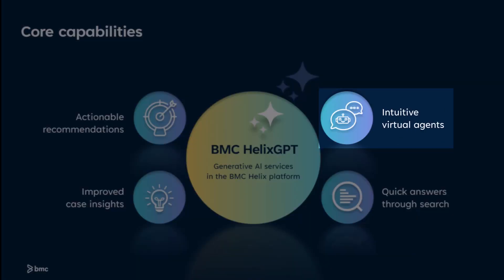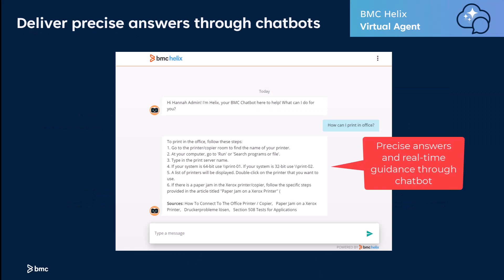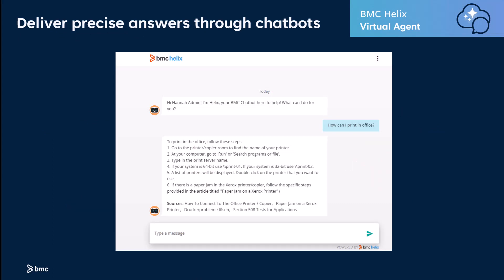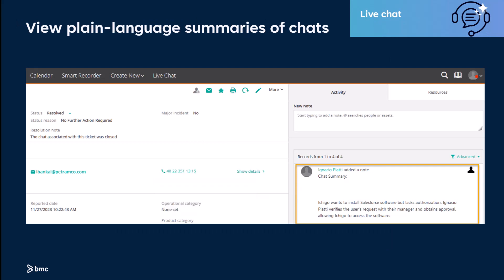Use BMC Helix GPT as an assistant service provider to deliver precise answers and real-time guidance to end-users through chatbots. Provide a clear, plain-language summary of the chat between the end-user and the agent.